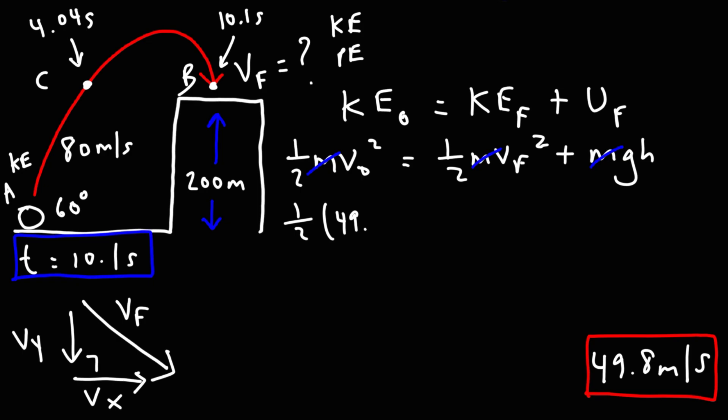So it's going to be 1 half v initial squared. So v initial is 80. So in this formula, this is not vx or vy, this is just v. Our goal is to calculate v final. The acceleration due to gravity is 9.8, and then we have the height, which is 200.